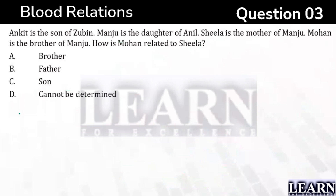Ankit is the son of Zubin. Manju is the daughter of Anil. Sheila is the mother of Manju. Mohan is the brother of Manju. How is Mohan related to Sheila?